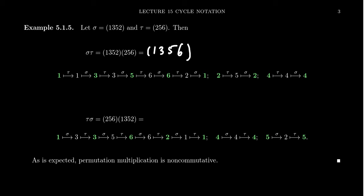In general, we just list the elements one by one. If we switch the order and take tau times sigma, for the cycle containing 1: sigma sends 1 to 3, and then tau sends 3 back to 3, so the composite sends 1 to 3.